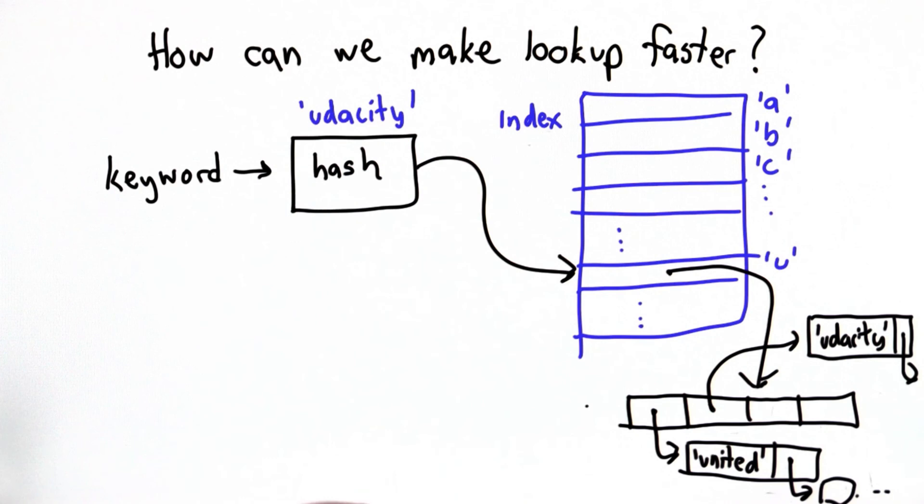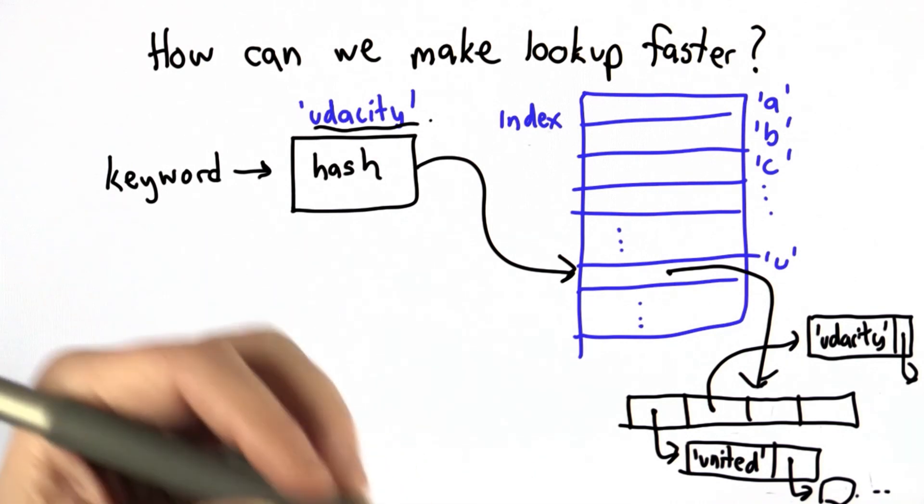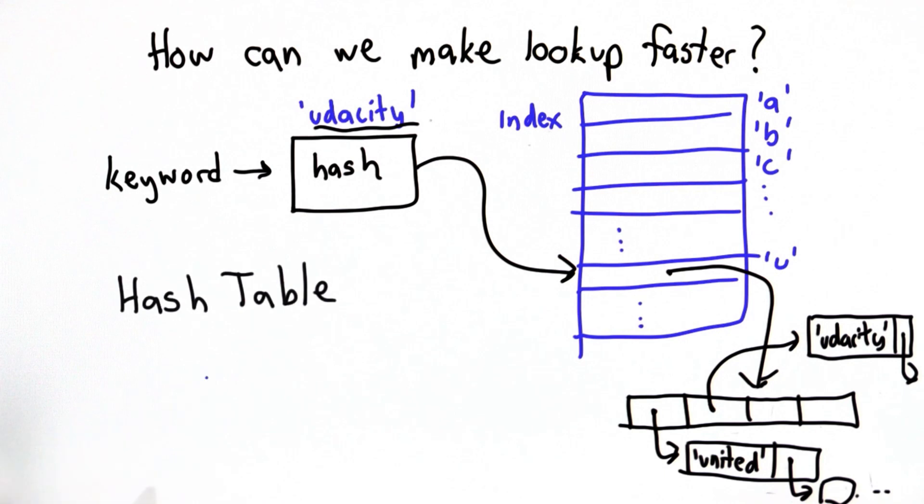We want to be able to have more buckets, so we're not going to just use the first letter. We're going to use some function on the whole word that tells us where it belongs. And we're going to try to make that function distribute the words fairly well. So the structure that I've described is what's called a hash table.